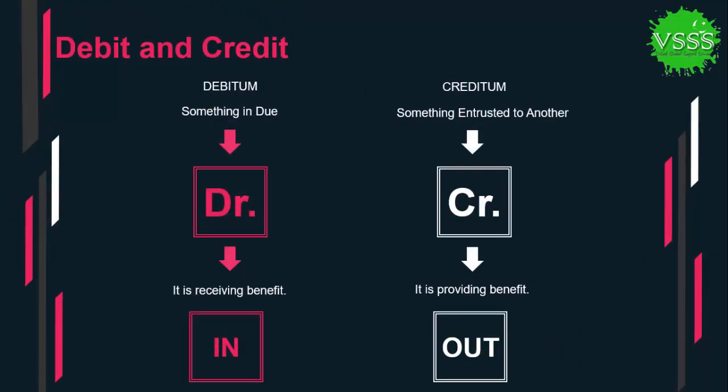The first topic we are discussing today is debit and credit. The words debit and credit are derived from two Latin words: 'debitum' and 'creditum.' Debitum means something due, and creditum means something in trust to another. In simple words, the word debit means receiving benefit, while the word credit means providing benefit. We can say debit is the left-hand side and credit is the right-hand side.